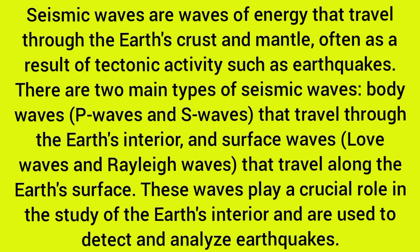There are two main types of seismic waves: body waves — P waves and S waves — that travel through the Earth's interior, and surface waves — Love waves and Rayleigh waves — that travel along the Earth's surface.